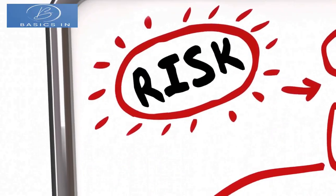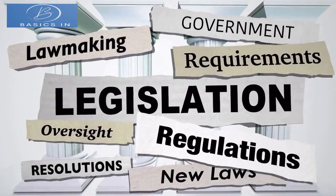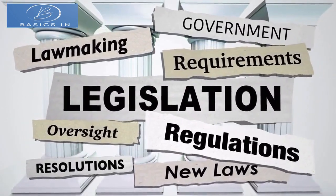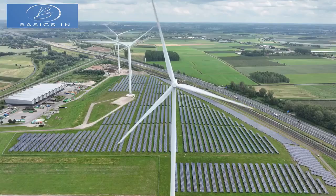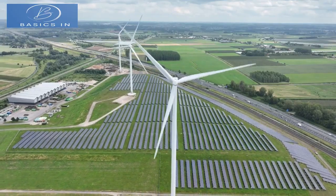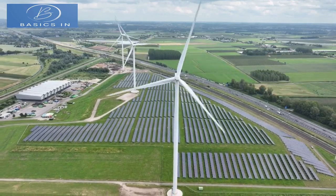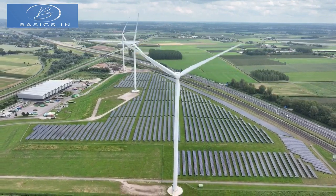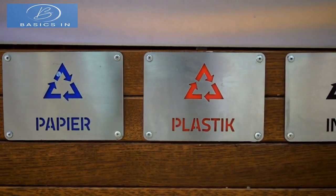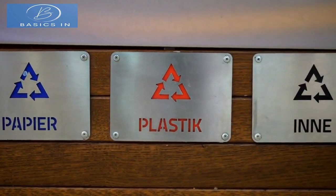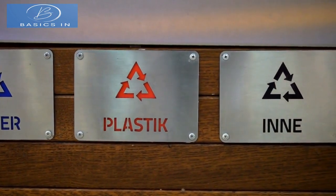Mitigation measures include regulation and legislation: implementing and enforcing strict environmental laws to limit pollution from industries, vehicles, and waste disposal. Transitioning to renewable energy sources — solar, wind, and hydro — can reduce air pollution and greenhouse gas emissions. Improved waste management through proper disposal, recycling, and reducing single-use plastics helps minimize pollution of land and water bodies.